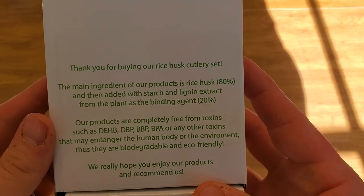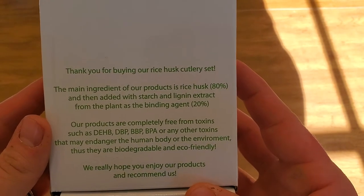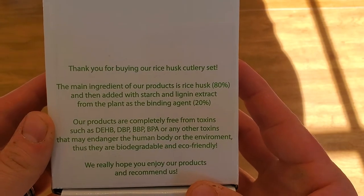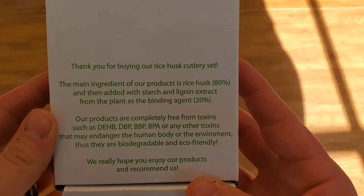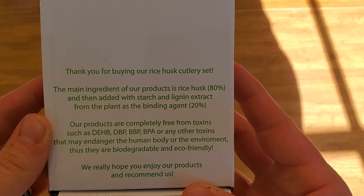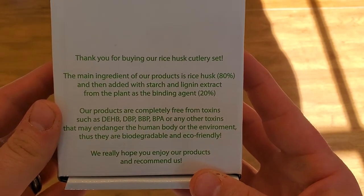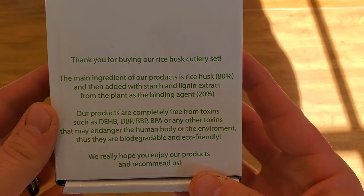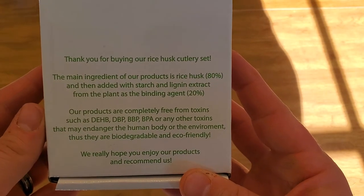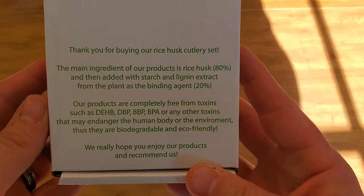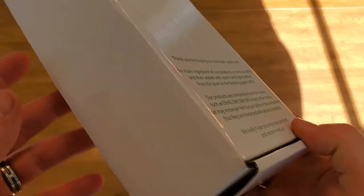Thank you for buying our rice husk cutlery set. The main ingredient of our product is rice husk, 80%, then added with starch and lignin extract from the plant as a binding agent, 20%. Our products are completely free from toxins such as DEHP, DBP, BPA, or any other toxins that may endanger the human body or the environment. Thus, they are biodegradable and eco-friendly. We really hope you enjoy our products and recommend us.